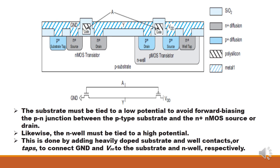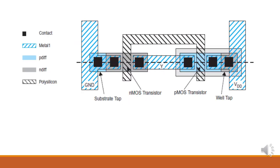Likewise, the N-well should be connected to a high potential to avoid forward biasing the diode. In the inverter layout, we have the NMOS transistor, the PMOS transistor, and the polysilicon for the gate. Metal connects to ground and to the power supply. There is a well tap connected to high potential and a substrate tap tied to ground.